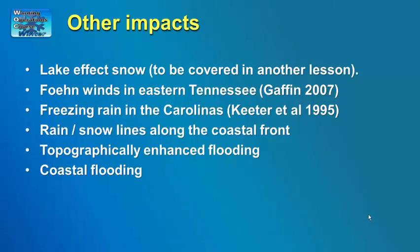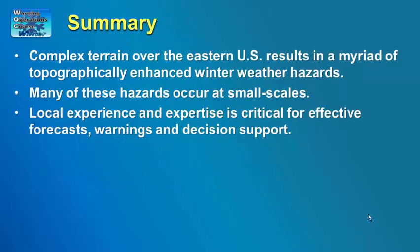This lesson is focused mainly on the impacts of topography on snowfall, but there are many other impacts that time limitations keep us from covering in detail here. These include lake effect snowfall, foehn downsloping winds in eastern Tennessee, freezing rain in the Carolinas, rain-snow lines along coastal fronts, topographically forced heavy rainfall and flooding, and coastal flooding. The topography over the eastern U.S., while not as pronounced as in the west, is still more than enough to produce a myriad of topographically enhanced winter weather hazards, many of which occur on small scales. Forecasters will need to learn and experience these impacts for their own county warning areas, as local experience and expertise will be critical for effective forecasts, warnings, and decision support.